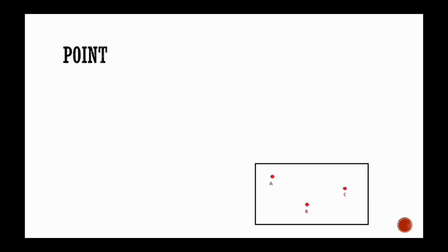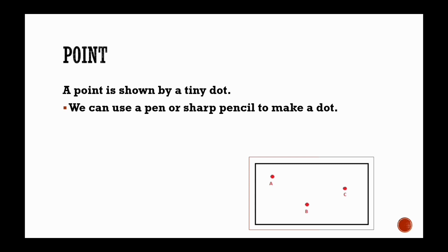First we will see what is point. A point is a tiny dot. We can use a pen or a sharp pencil to make a dot.